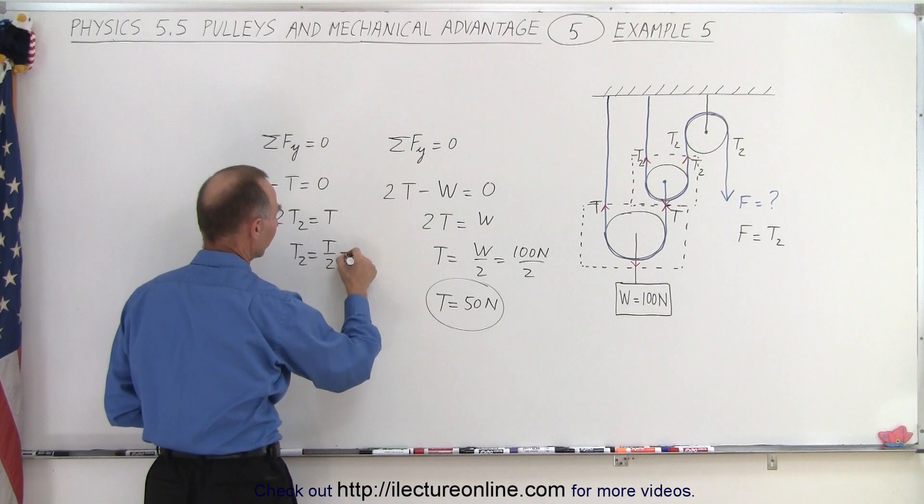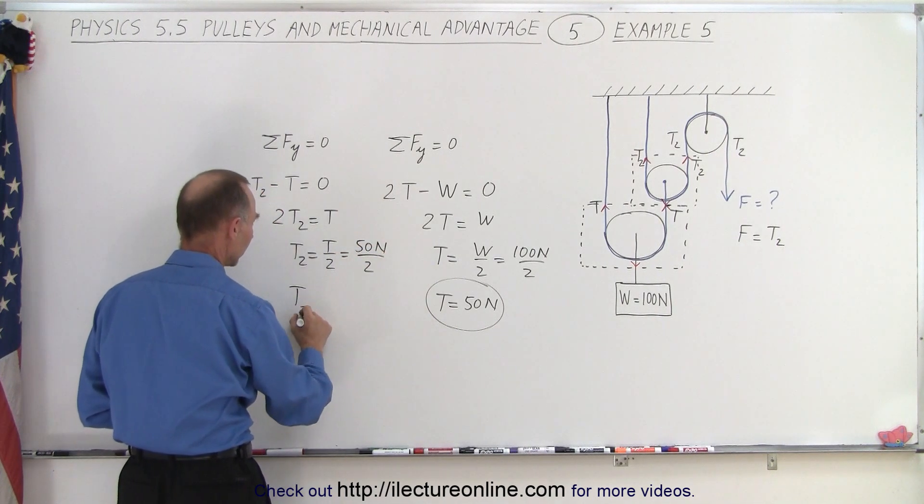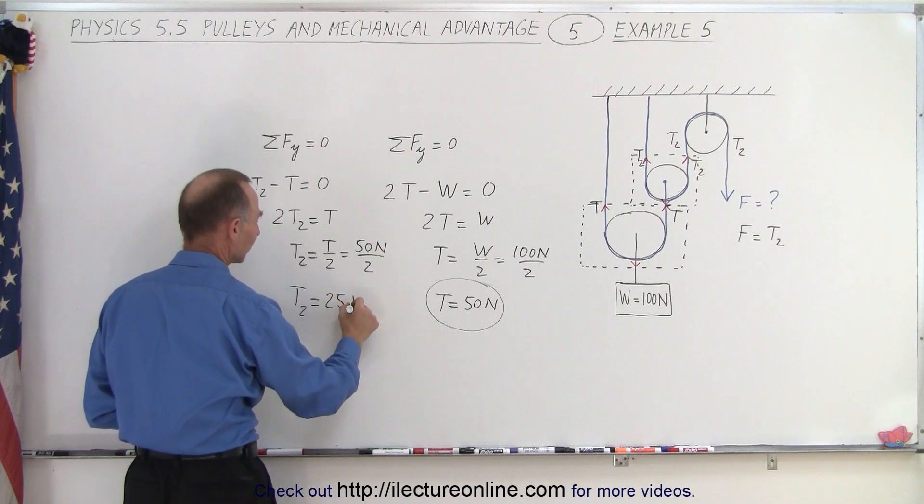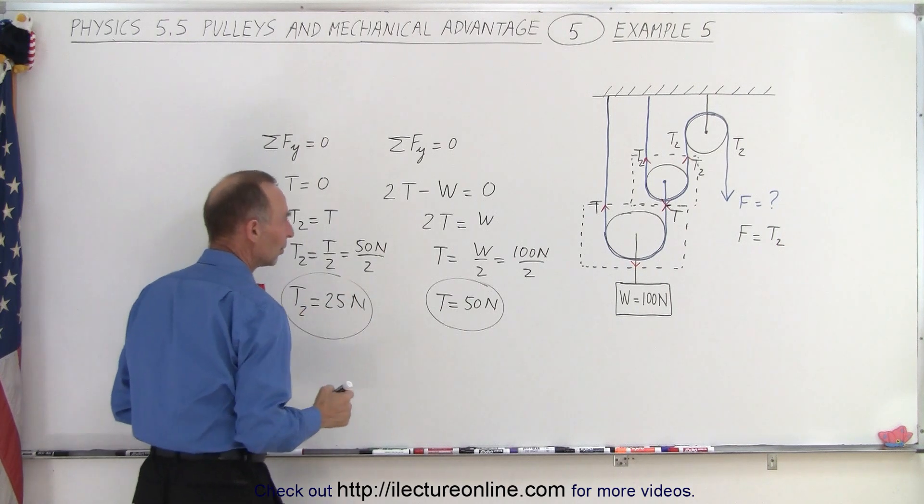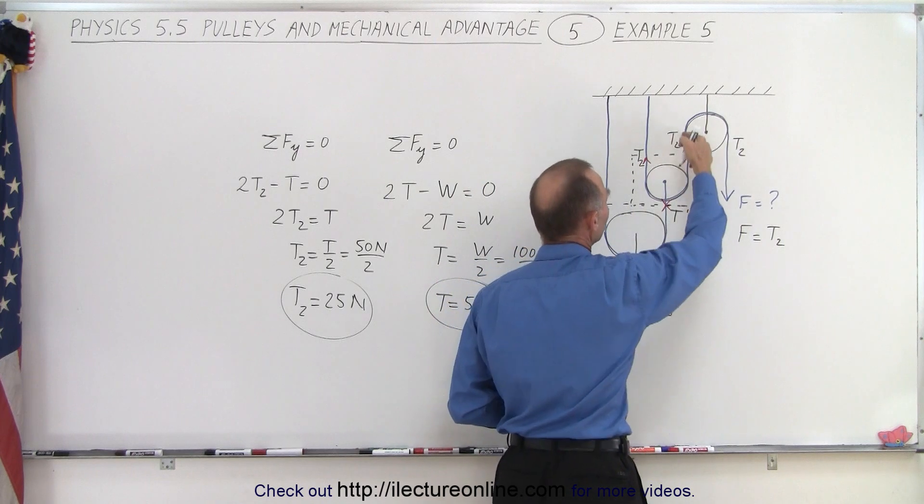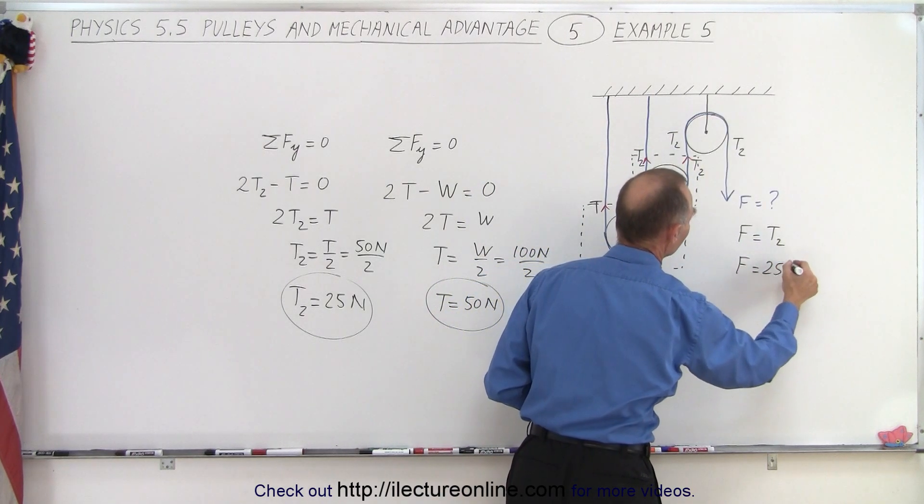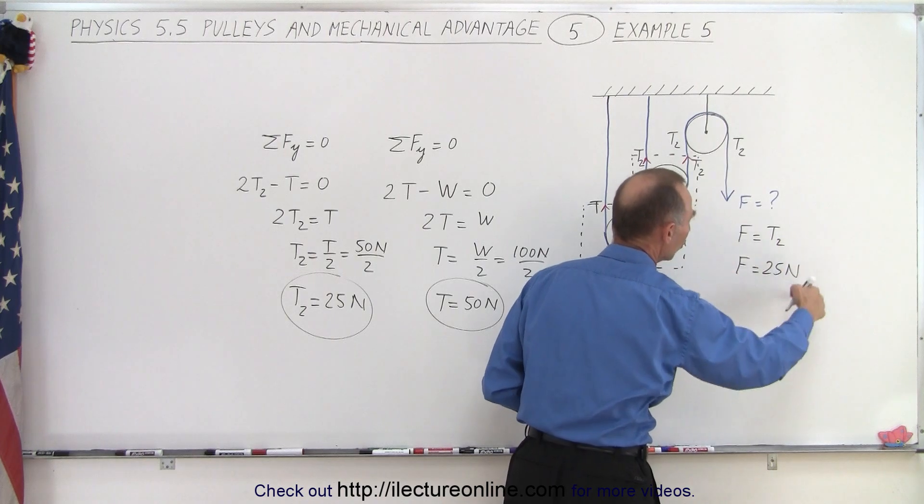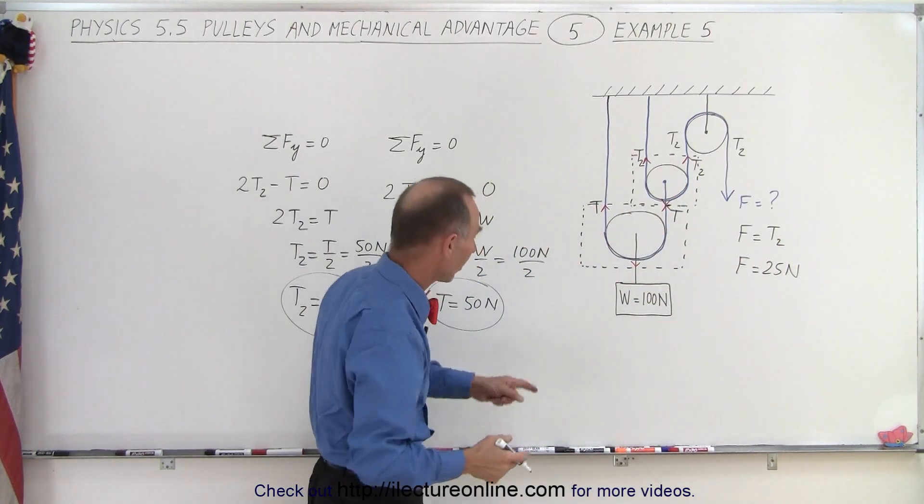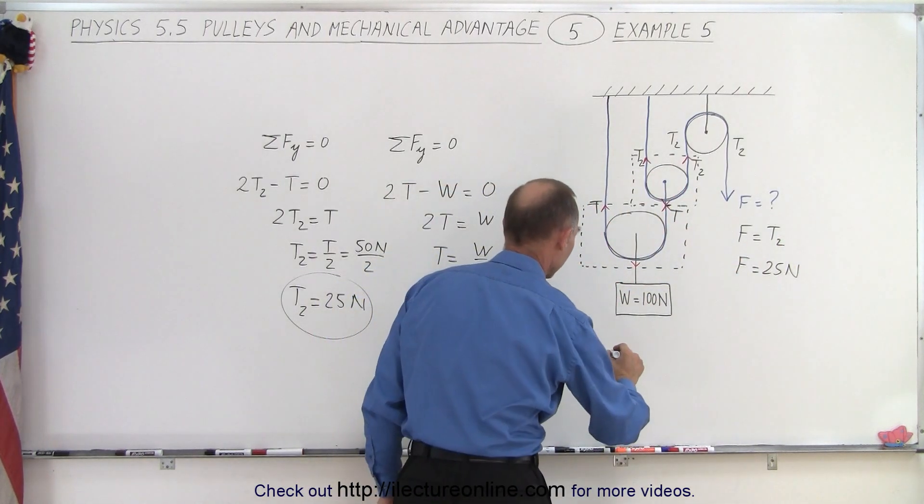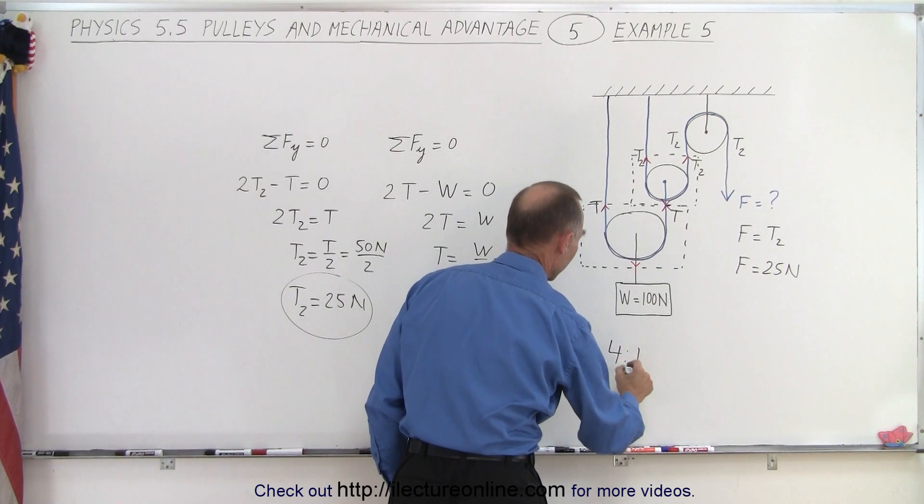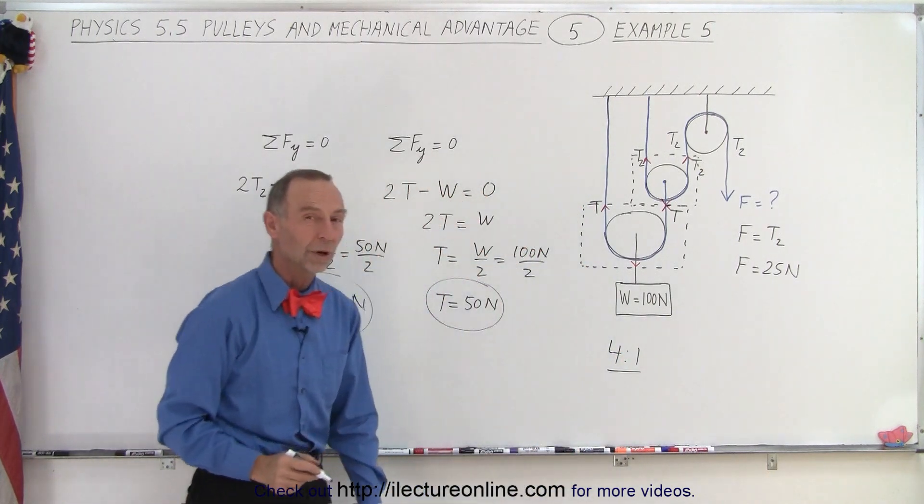And since T is equal to 50 newtons that's 50 newtons divided by 2, or T2 equals 25 newtons. And we realize then that T2 is the tension on this string all the way down to here so therefore F equals 25 newtons, which means we need one quarter of the force to lift up the 100 newton weight here so therefore the mechanical advantage in this case is 4 to 1.